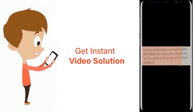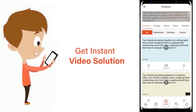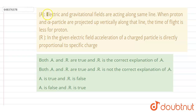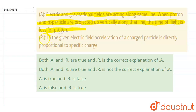Electric and gravitational fields are acting along the same line. When proton and alpha particle are projected vertically along the line, the time of flight is less for proton. In the given electric field, the acceleration of a charged particle is directly proportional to specific charge.